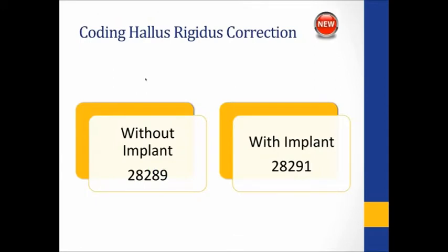So what's new this year? They've added code 28291. The 28289 has always been there and has just been tweaked a little bit. 28289 is the code for general treatment of the arthritic toe — they clean up, they remove bone spurs, a general debridement cleanup code. If they put an implant in, then you go to the new 2017 code, 28291.